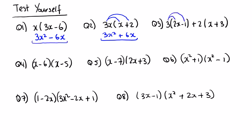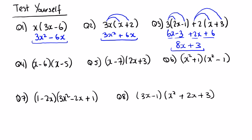This one: 3 by 2x and 3 by 1 gives 6x minus 3; plus 2 by x and plus 2 by plus 3 is plus 2x plus 6. We have a pair of like terms: 6x plus 2x is 8x. And for the constants — I'd always start with the plus number — 6 minus 3 is plus 3. No more like terms, we're done.